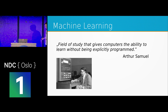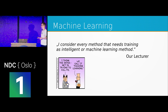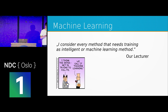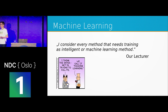The second definition: when we were studying and had to implement an intelligent method, we didn't know what that meant, so we asked our lecturer. He told us he considered every method that needs some kind of training as an intelligent or machine learning method — using the intuition that people and animals are considered intelligent, and we also need training when we try to master tasks.